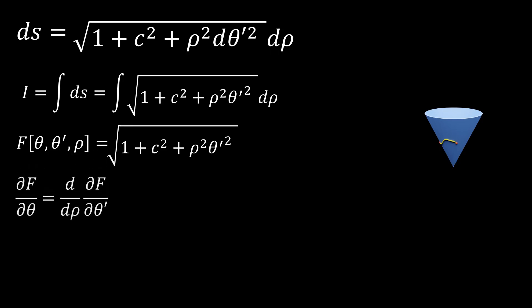We'll use the Euler-Lagrange equation, which says that the derivative of the functional with respect to theta is equal to the derivative with respect to rho of the derivative of the functional with respect to theta prime. This equation allows us to solve for a function theta of rho, which will minimize the arc length integral, giving us the shortest path between two points.